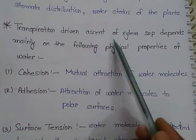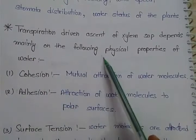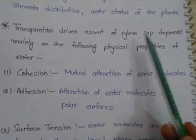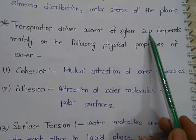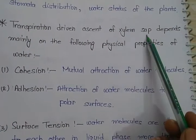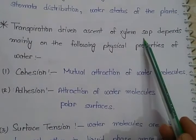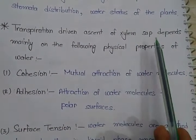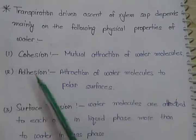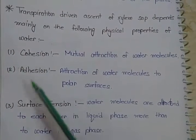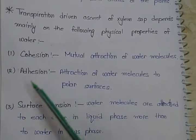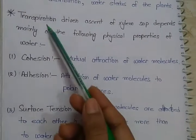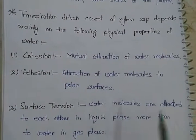Transpiration driving ascent of xylem sap depends mainly on the following physical properties of water. Transpiration kya kar raha hai — ascent of xylem sap provide kar raha hai. These three physical properties of water molecules ke karan transpiration xylem ko driving force provide kar paa raha hai.